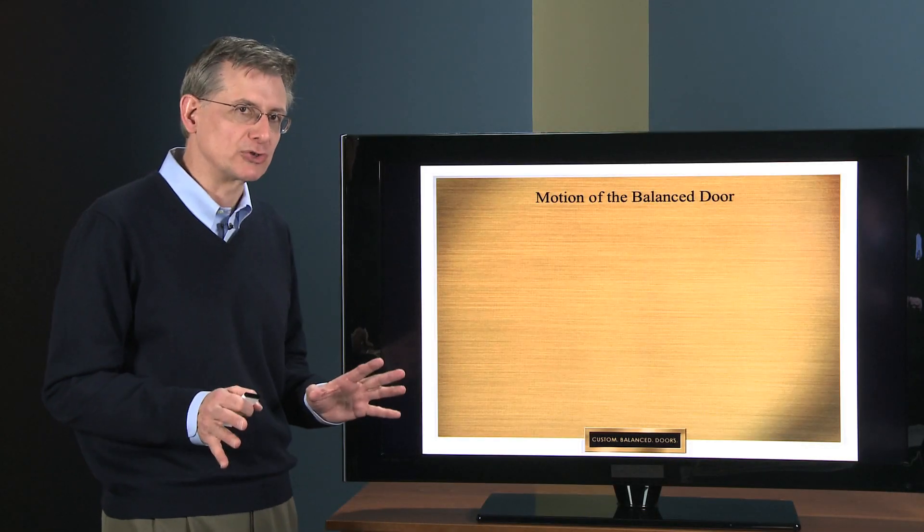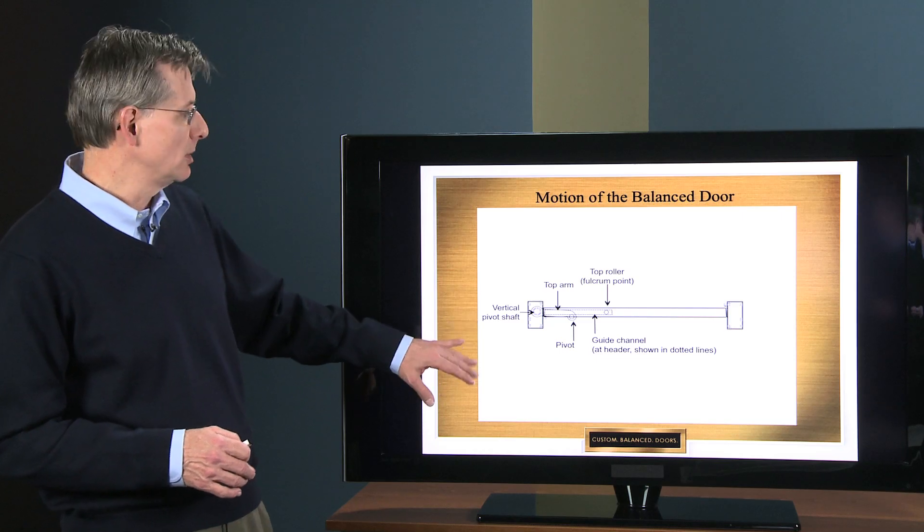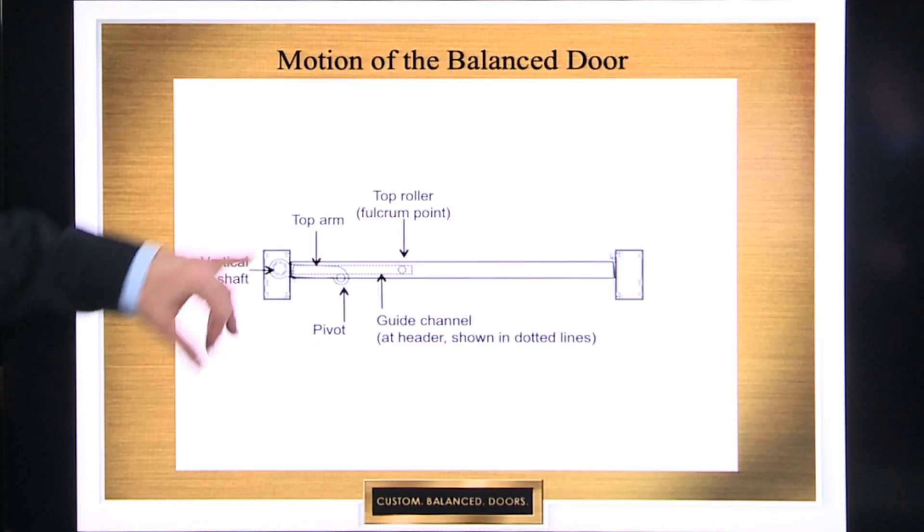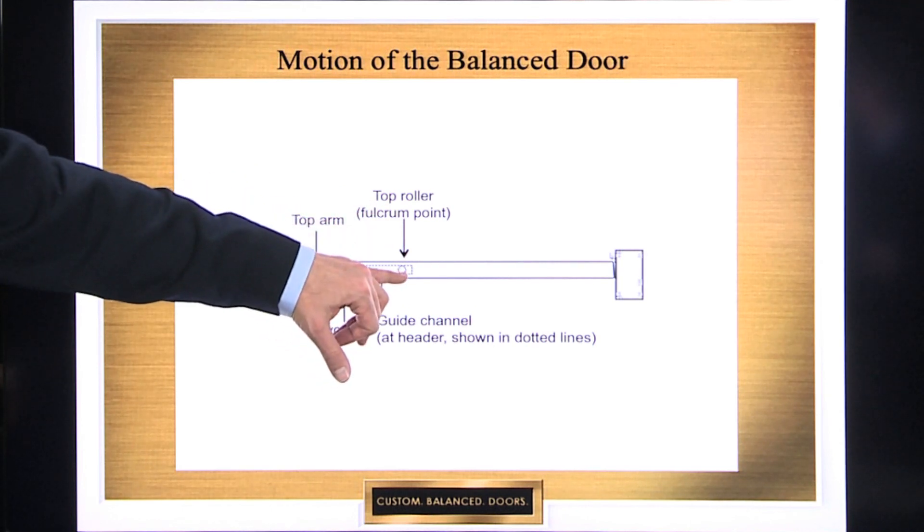Now we're going to show the motion of a true balanced door. Again, this is in plan view. What you're going to see is the vertical pivot shaft, the top arm here, the top roller, the fulcrum point.